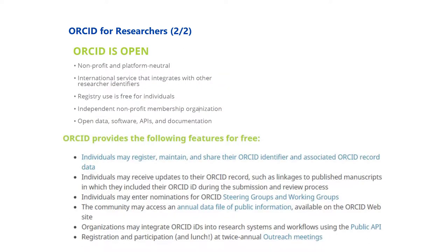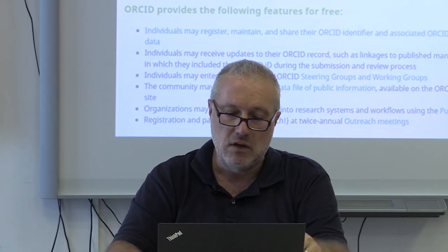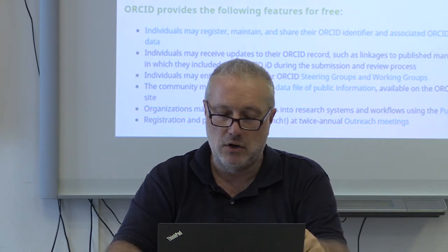ORCID is open. It is a not-for-profit, worldwide organization. It's platform neutral and an international service that integrates with other research identifiers. It's free for individuals but also provides services for organizations. It provides open data and APIs and documentation in case your own applications want to use ORCID IDs and information contained in the ORCID profiles.